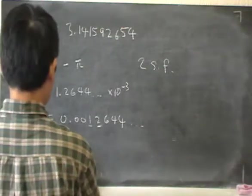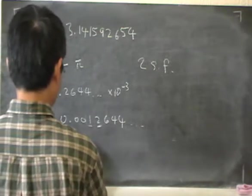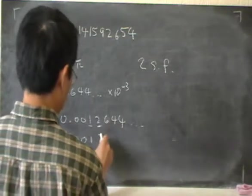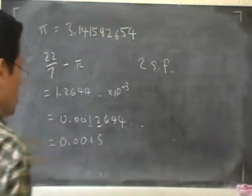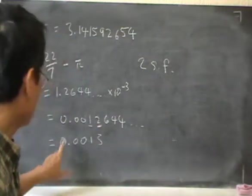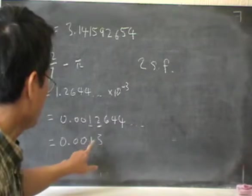So in this case, that means, right, that's a six, so I'll round up to three there. And I drop all the rest. So the answer is 0.0013.